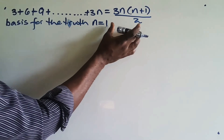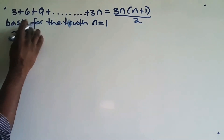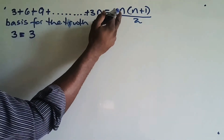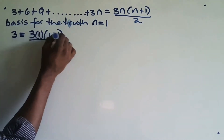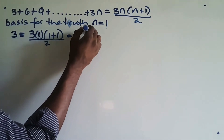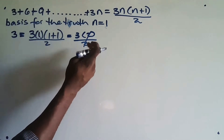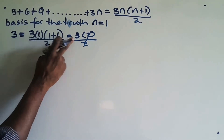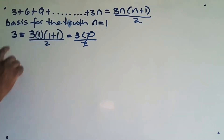So I'm going to do the test. We're testing where n is 1: 3 should be equal to 3 times 1, open bracket, 1 plus 1 all over 2. If we finalize this, 3 times 1 is 3 outside, times 2 all over 2. The 2 cancels 2, so we're seeing for real that when n is 1, the first term would be 3. That's the first step — we test for truth.